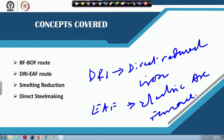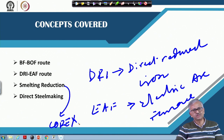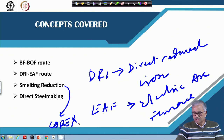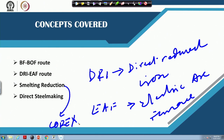Another route is the smelting reduction route. In this route, the main processes are Corex and Finex, which are commercialized processes. Corex is the most well-known commercialized smelting reduction furnace and is available even in India. There are several other smelting reduction processes, but the commercialized ones are mainly Corex and Finex. There are also some potential direct steel making routes, although no commercial process is available today.